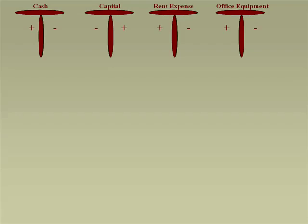Capital is a liability. So decrease left, increase right — it's minus plus. Expense: Pacioli said increase left, decrease right, so it's plus minus. Office equipment is an asset — increase left, decrease right, so it's plus minus. Did you get those right? If you did, you're starting to really understand these laws.